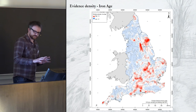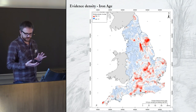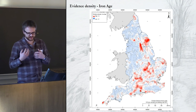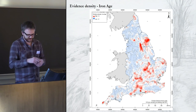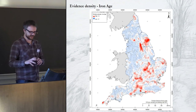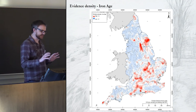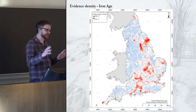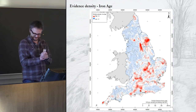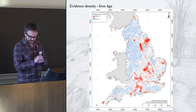The end result is a picture of the density of evidence complexity for each period in the EngLaId dataset. I'm not going to show you the Bronze Age one today, because that's not really relevant to the Roman topic of this conference.